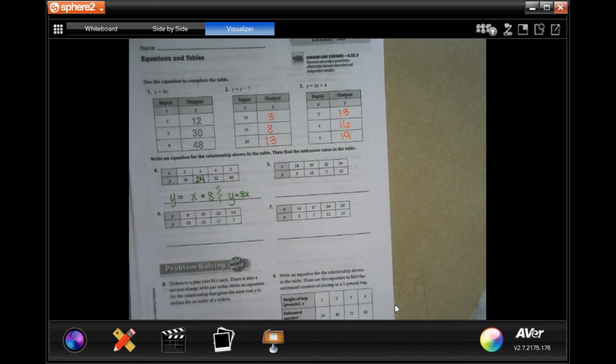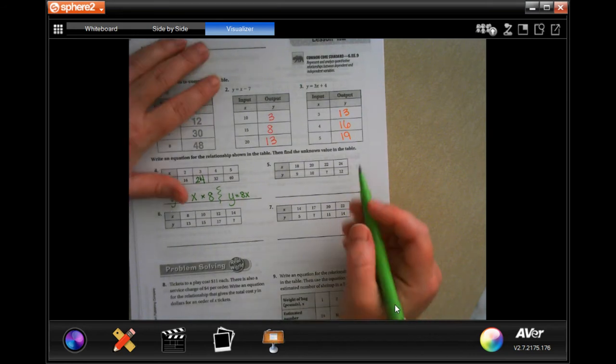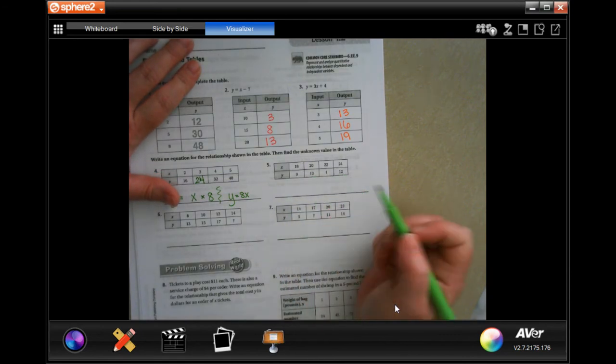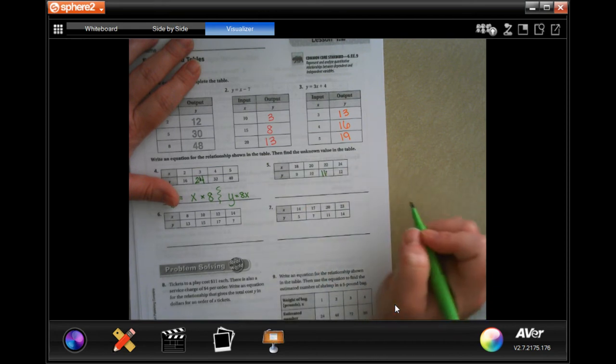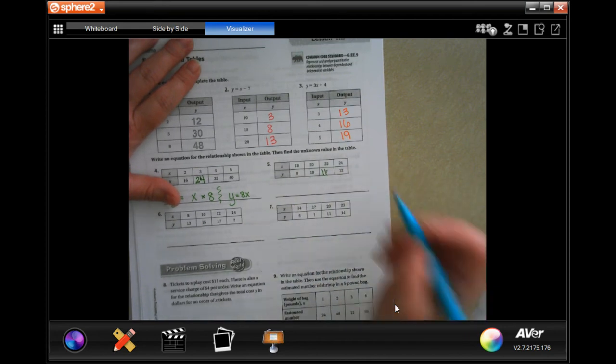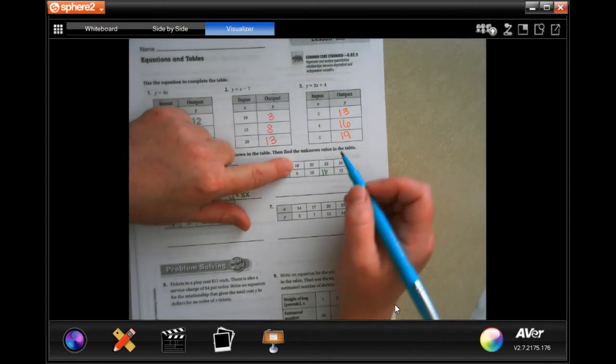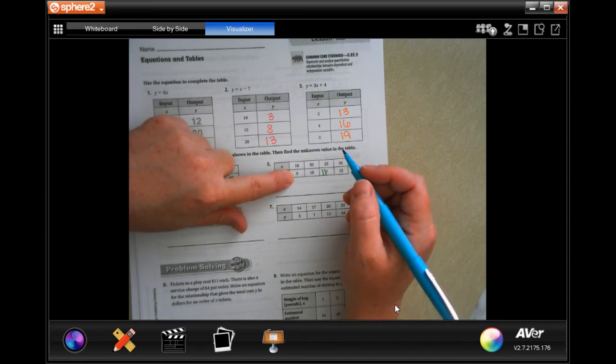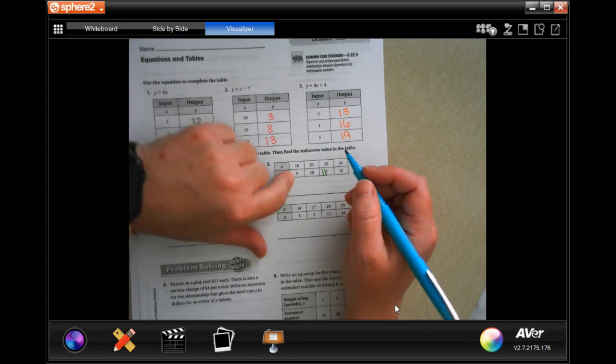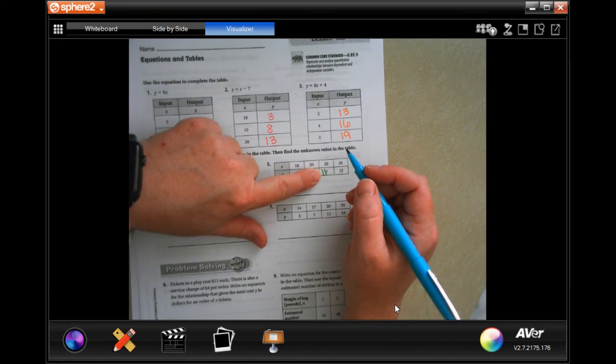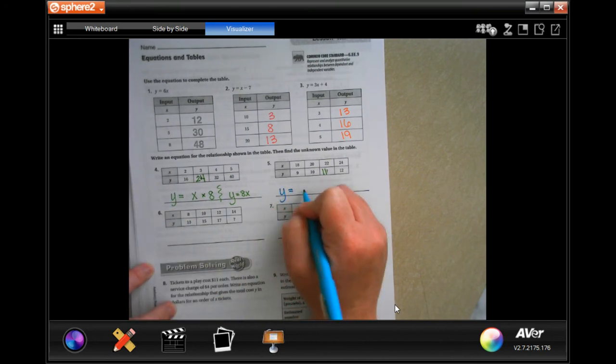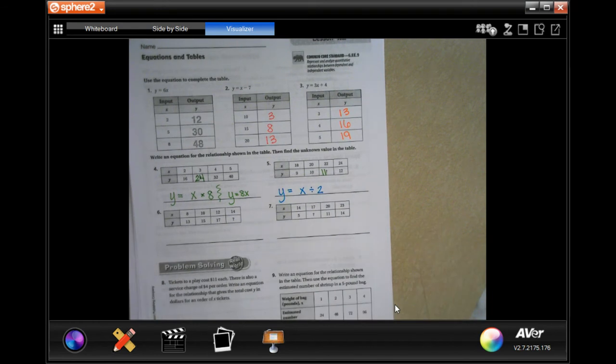So now let's try the next one. We need to find out first the pattern from the bottom row. Well 9, 10, blank, 12, well obviously that's going to be 11. So now I need to know how I get from x to y. Well I get from x 18 to y by dividing by 2. I get from 20 to 10 by dividing by 2, 22 to 11 divide by 2, and 24 to 12 divide by 2. So we're going to say y equals x divided by 2, done.